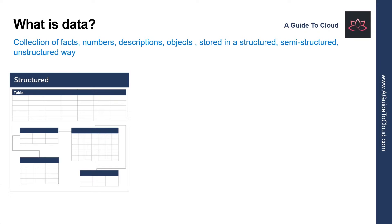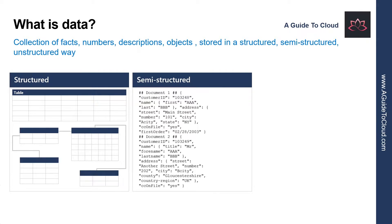Now let's understand what is semi-structured data. Semi-structured data is information that doesn't reside in a relational database but still has some structure to it. Examples include documents held in JavaScript Object Notation or JSON format. This example shows a document representing customer information, where each customer document includes a child document containing the name and address, but the fields in these child documents vary between customers.